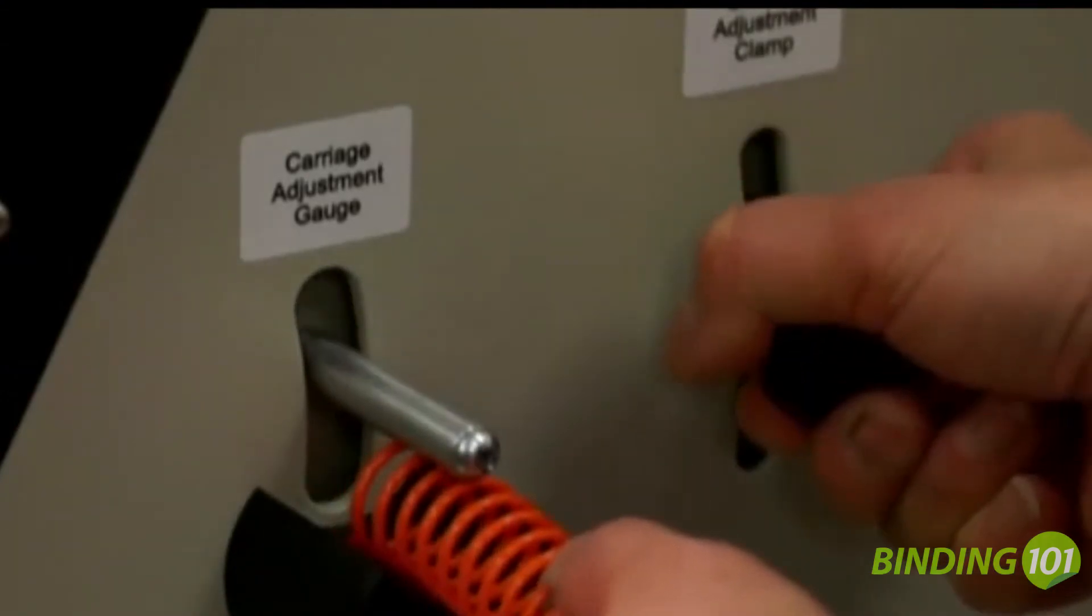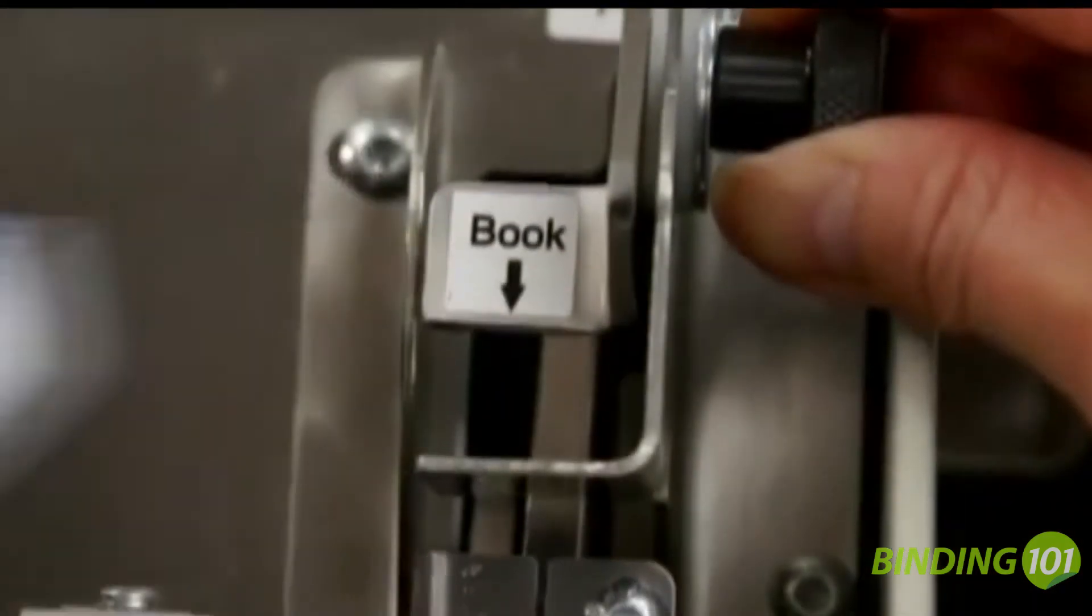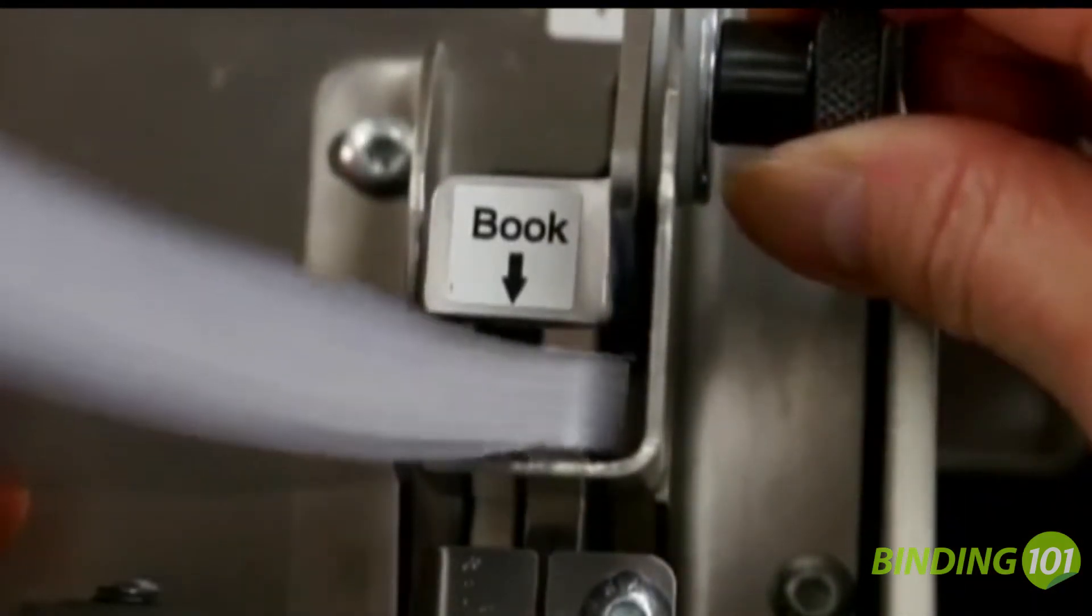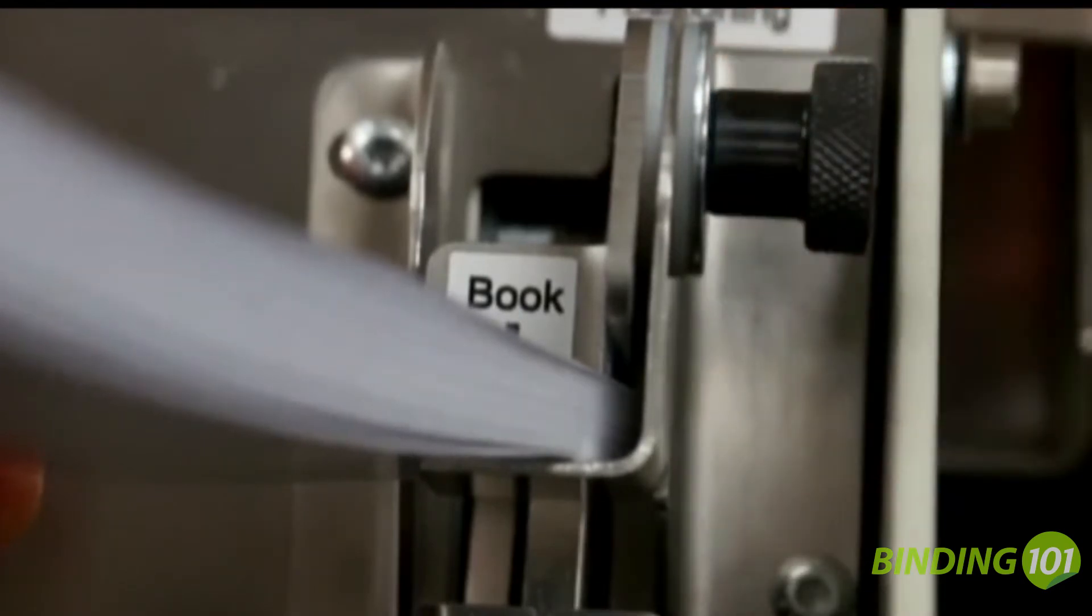The Coilmatic's innovative carriage adjustment gauge lets the operator change from size to size with ease. The Coilmatic book clamp adjustment gauge uses the book that's being bound to set the proper book clamp positioning.